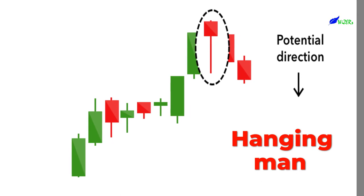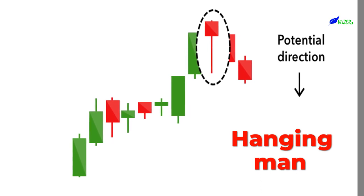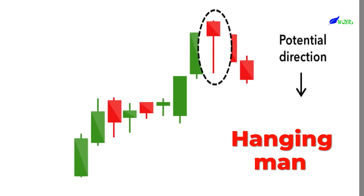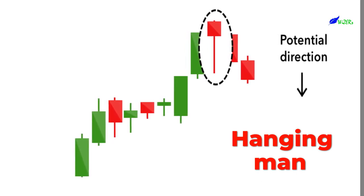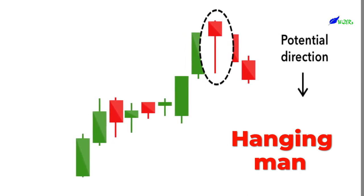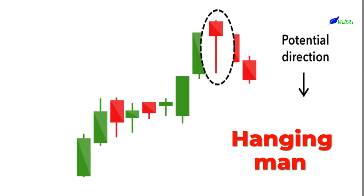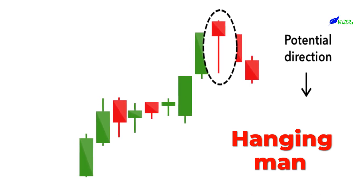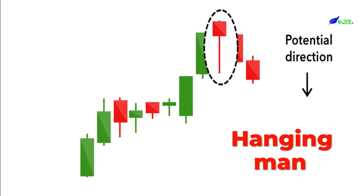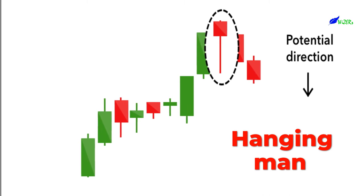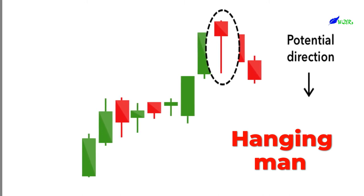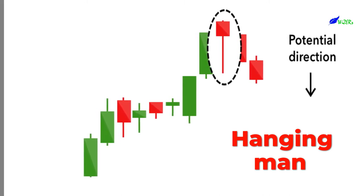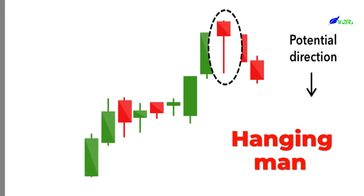The hanging man is the bearish equivalent of a hammer — it has the same shape but forms at the end of an uptrend. It indicates that there was a significant sell-off during the day, but that buyers were able to push the price up again. The large sell-off is often seen as an indication that the bulls are losing control of the market.